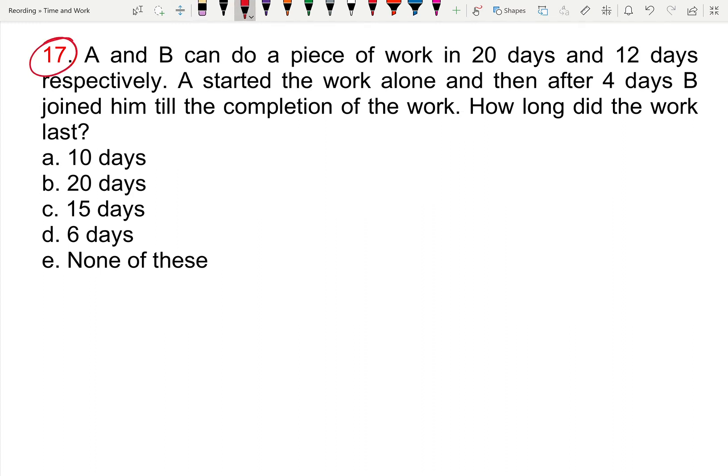Next one is 17th one. A and B can do a piece of work in 20 days and 12 days respectively. A started the work alone and then after 4 days, B joined him till the completion of the work. How long did the work last?